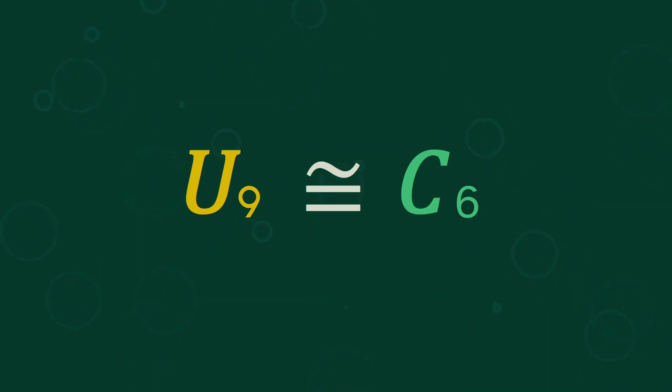So, as we saw before, the units mod 13 are isomorphic to a 12 cycle. And we might wonder, do the units always form a single cycle?